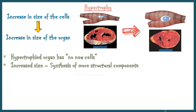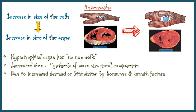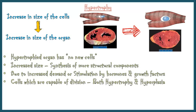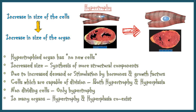A cell undergoes hypertrophy when there is an increased demand for the function of that particular cell, or due to stimulation by hormones or growth factors. Cells which are capable of division may respond by undergoing both hypertrophy and hyperplasia. However, non-dividing cells like myocardial cells undergo hypertrophy only. In many organs, hypertrophy and hyperplasia coexist and contribute to the increased size.